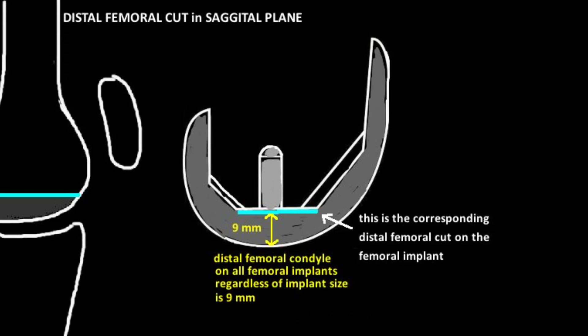The femoral implant of every company has a distal femoral condyle depth of 9 mm, which is consistent across every femoral implant size — small, medium, and large. A larger femoral implant does not affect the size of the distal femoral condyle. Therefore, the target depth for the distal femoral cut is 9 mm: you take 9 mm of bone and replace it with 9 mm of metal.